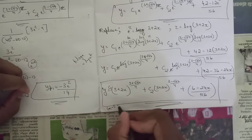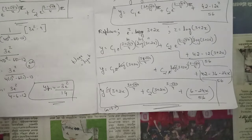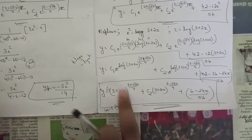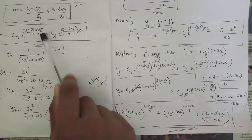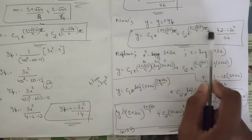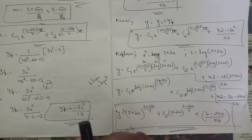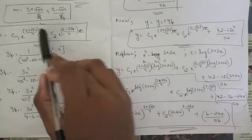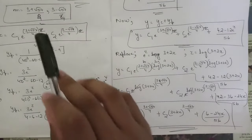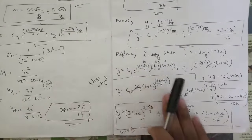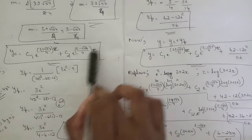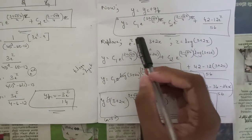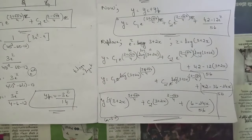Be very careful with these kinds of problems. All terms are important. The parameter should be z throughout — whenever you write the particular integral and complementary function, write them in terms of z, not x, because at the last step we replace e^z and z back in terms of x.